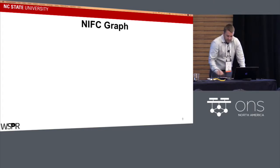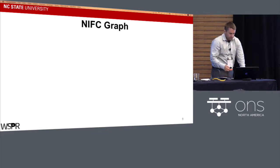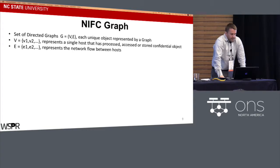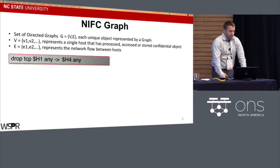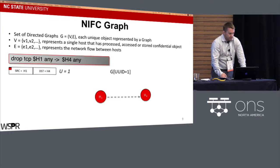The network information flow control graph is a set of directed graphs where each graph is indexed by UUID. It contains a set of vertices representing all hosts that have processed, accessed, or stored confidential information, and a set of directed edges representing how that confidential information flowed. For example, if a rule indicates confidential information may not flow from host 1 to host 4 and must be dropped, when a packet arrives between them it gets processed by the confidential rule and dropped.